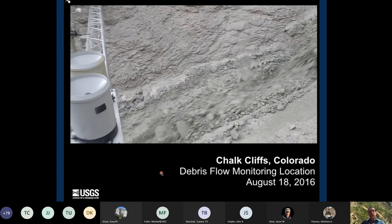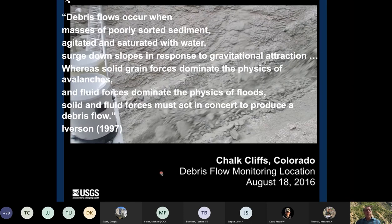I'm going to start with a definition of a debris flow that's out of Dick Iverson's 1997 paper, and I love this definition because it reads kind of like a poem. Dick said, debris flows occur when masses of poorly sorted sediment, agitated and saturated with water, surge down slopes in response to gravitational attraction. Whereas solid grain forces dominate the physics of avalanches, and fluid forces dominate the physics of floods, solid and fluid forces must act in concert to produce a debris flow.